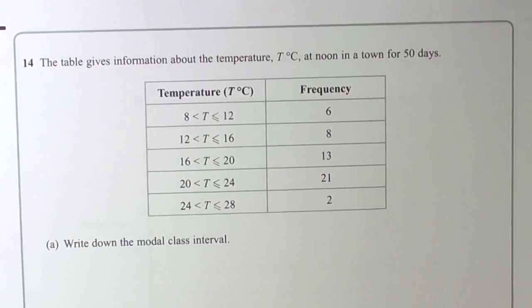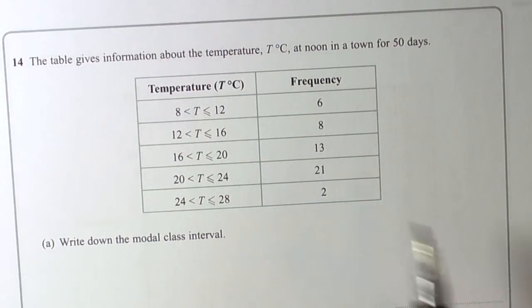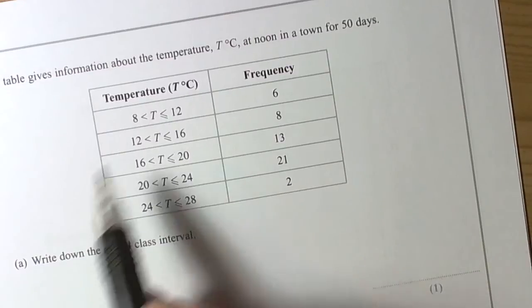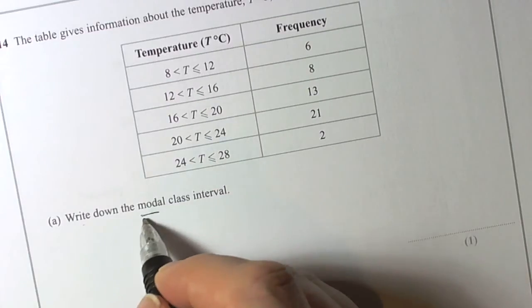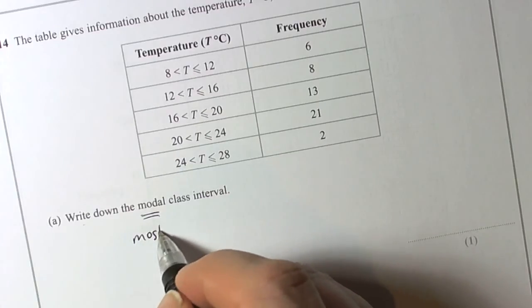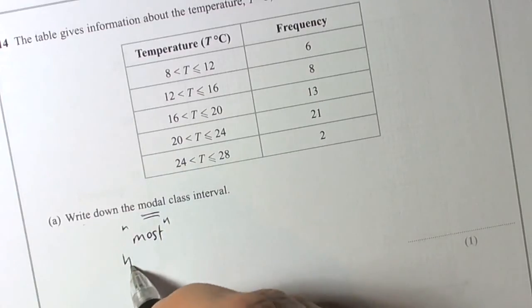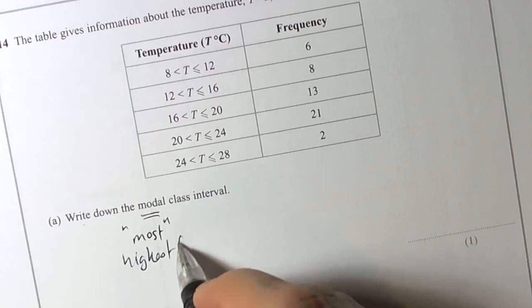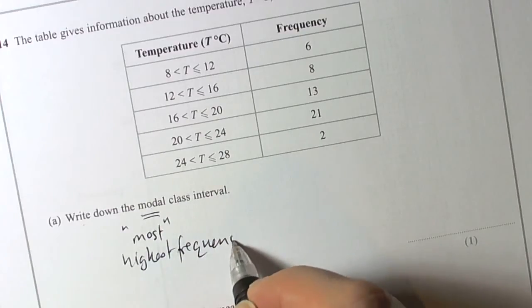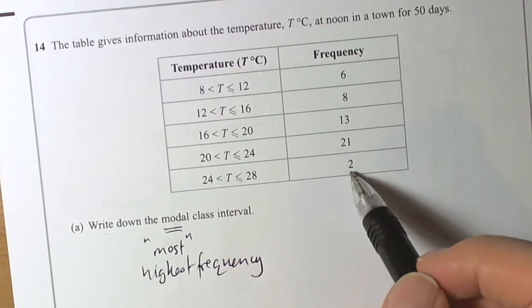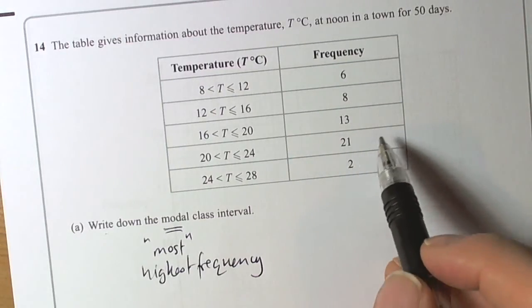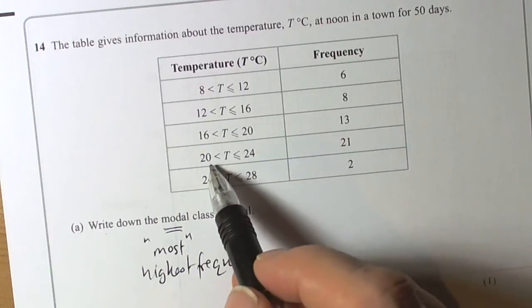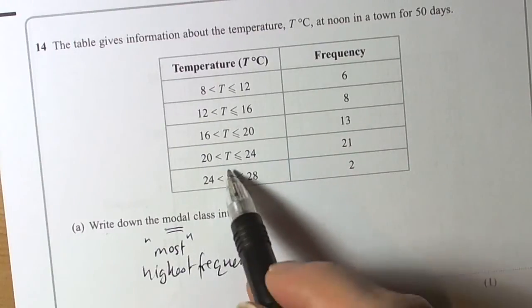We've got a question here involving data that's been given in a grouped table and it's asking us to interpret this information. We've got to write down the modal class. Well, that word modal is associated with the most often, the highest frequency. So we look at the table and it's telling us that the highest frequency was 21, so that's telling us that 21 days the temperature was between those, so this was the modal class interval.